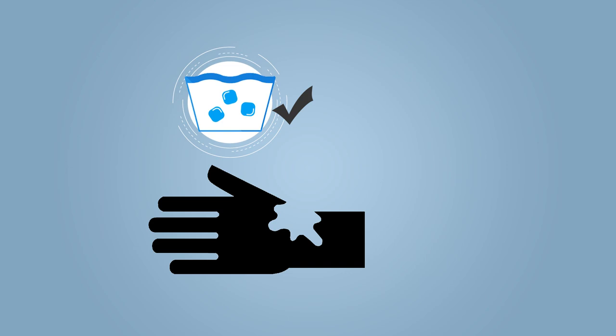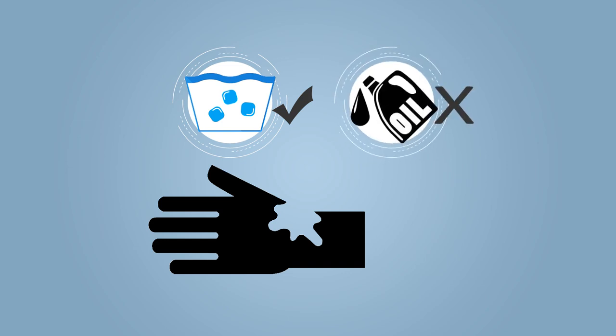Treat electrical burns by immersing them in cold water. Do not apply grease or oil. If the burns are severe, cut away any loose clothing and cover the burn areas with a bandage or piece of clean cloth.